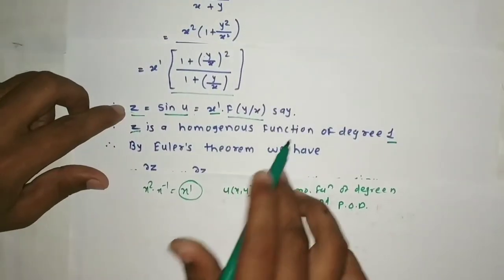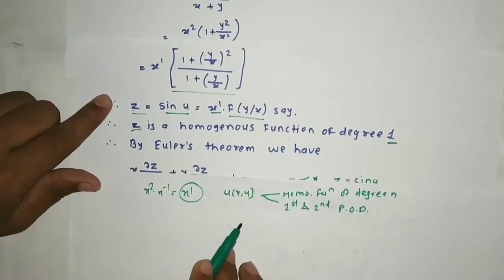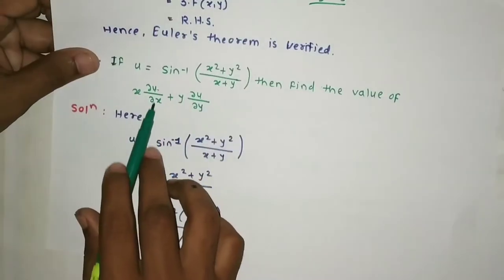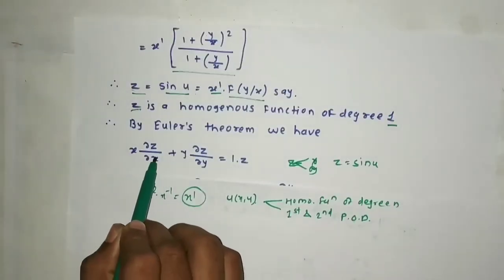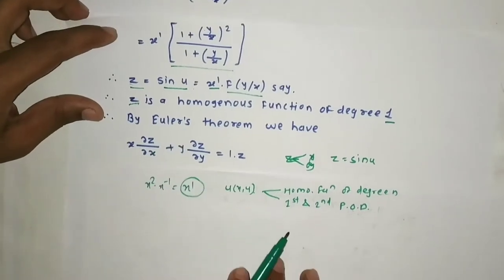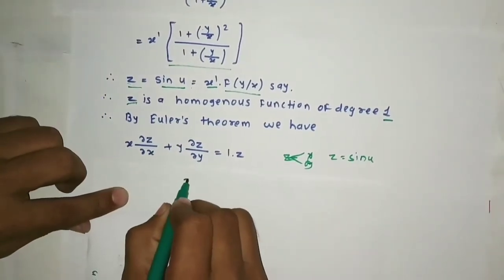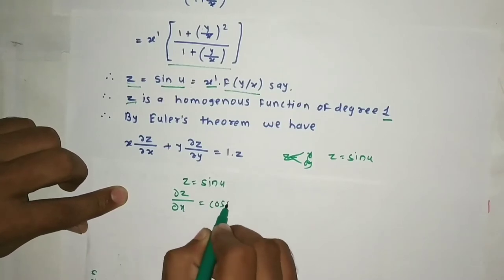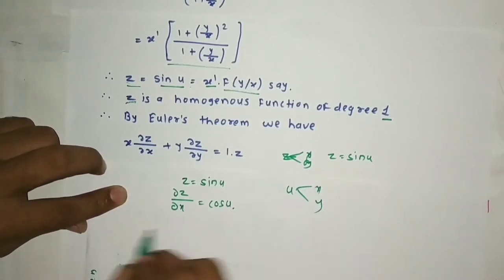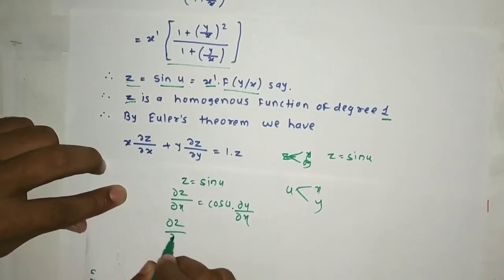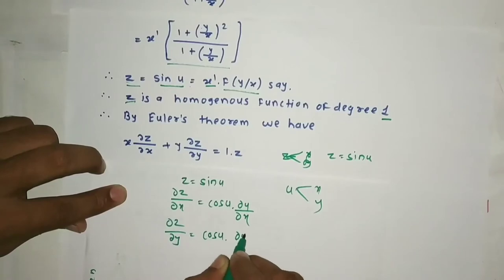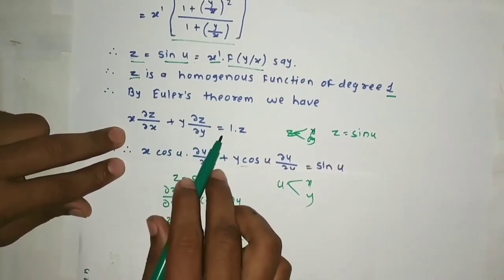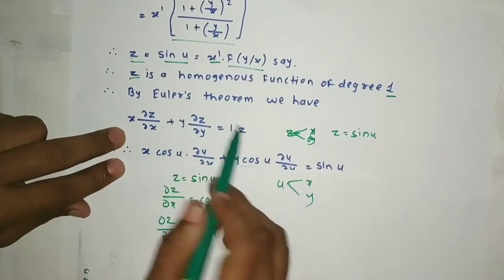So z = sin u is a homogeneous function of degree 1. By Euler's theorem: x · ∂z/∂x + y · ∂z/∂y = 1 · z = z = sin u. Now, z = sin u, so ∂z/∂x = cos u · ∂u/∂x, and ∂z/∂y = cos u · ∂u/∂y.